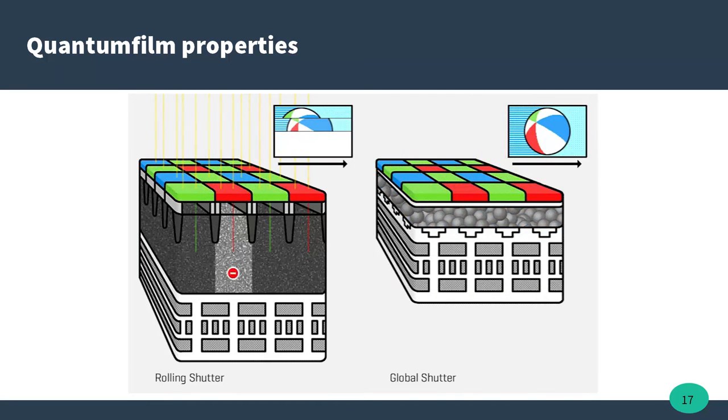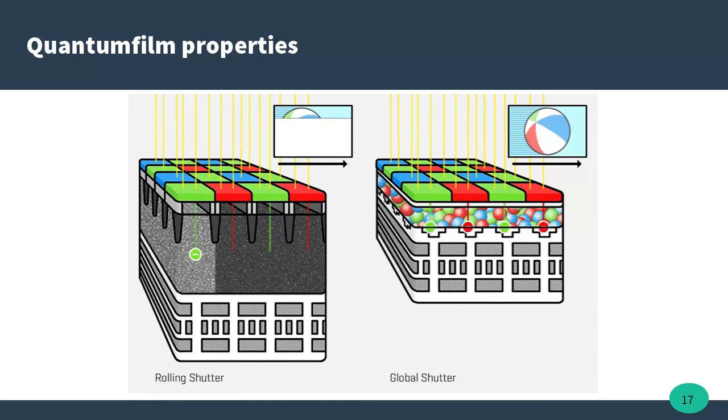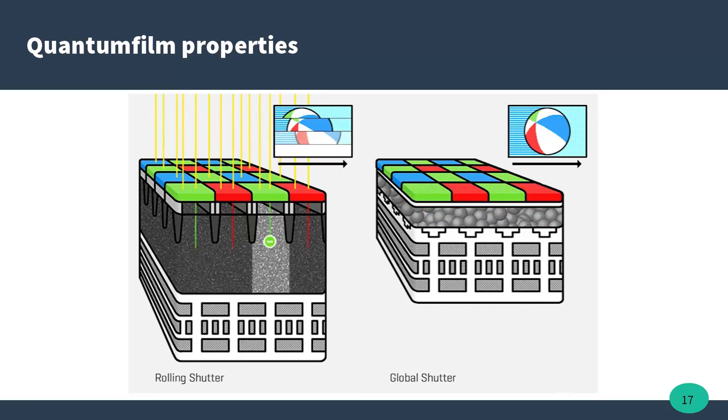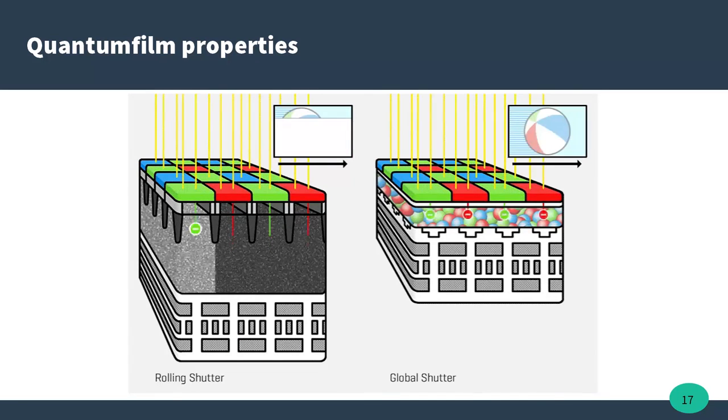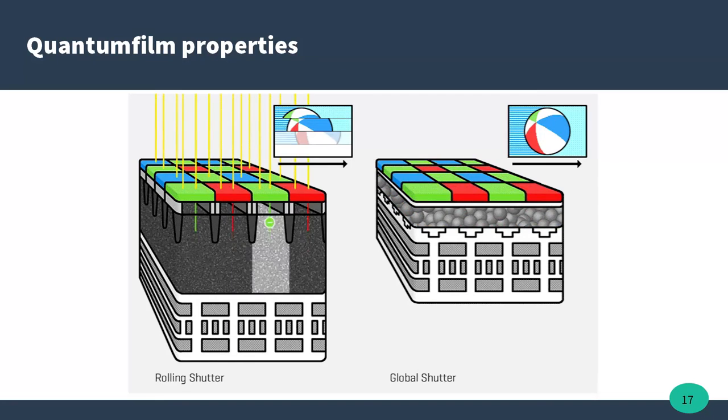Finally, the electronic shutter can be implemented on any CMOS circuit. In 2015, InVisage released a sensor called Quantum 13, whose aim is to be integrated into smartphones using quantum dots and use thinner and more efficient sensors. It is legitimate to introduce the electronic global shutter into this technology.